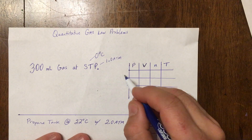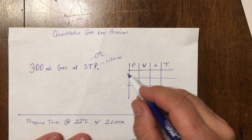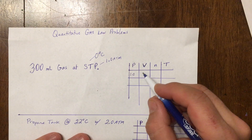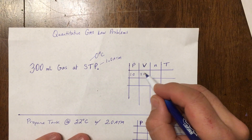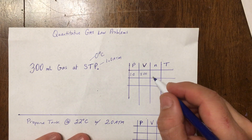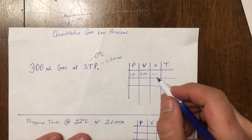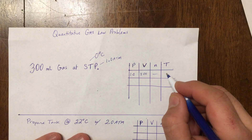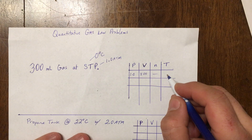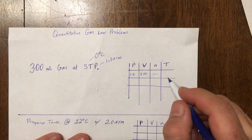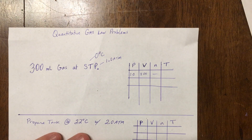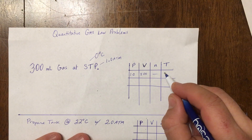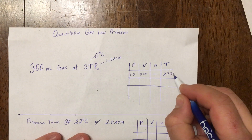So we're going to set these as our initial values. Pressure is one atmosphere, volume is 300 milliliters. My temperature is zero Celsius, but don't forget you have to be in Kelvin when dealing with gases, because pressure and volume are dependent on particle motion, and the Kelvin scale is the only scale designed around particle motion. So zero Celsius is 273 Kelvin.